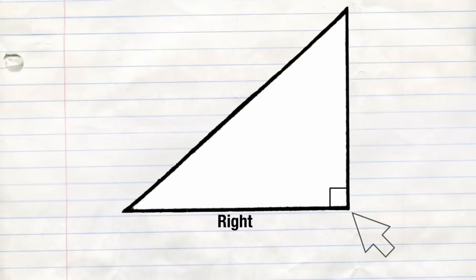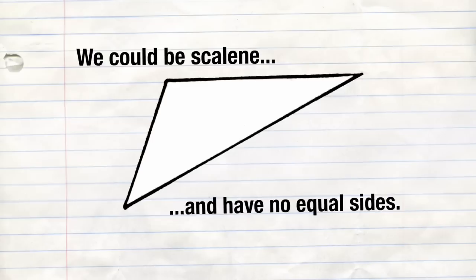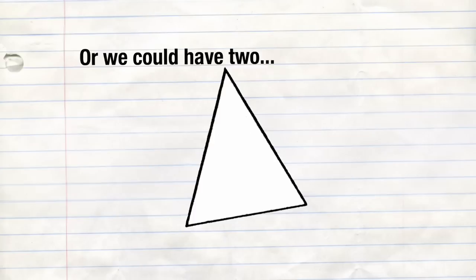We'll always be triangles — it's our polygonal family. If we treat sides equally, equilateral is what we'd be. We could be scalene and have no equal sides, or we could have two — it'd be an isosceles.